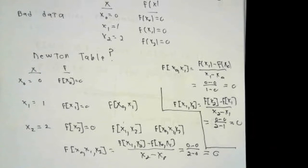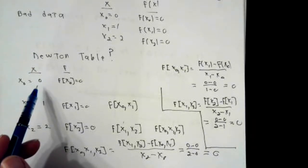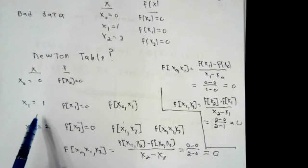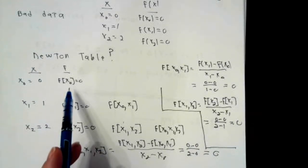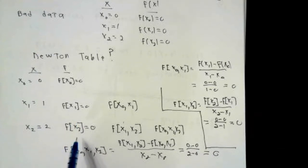The bad function values are all going to be 0. So when we construct the Newton table, the x values are x0 equals 0, x1 equals 1, x2 equals 2. The corresponding function values for x0, x1, and x2 are all 0s.